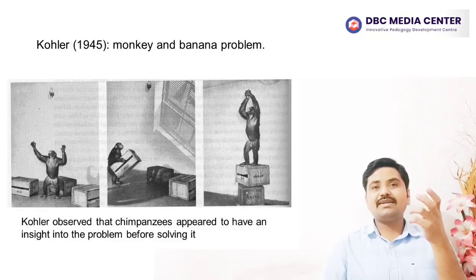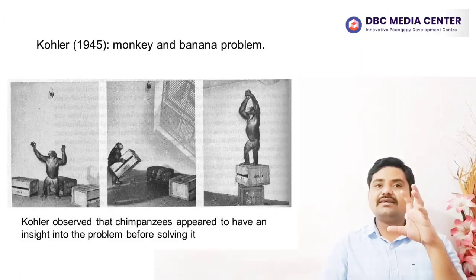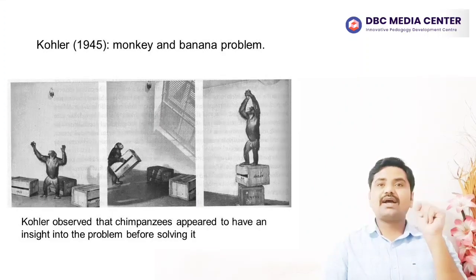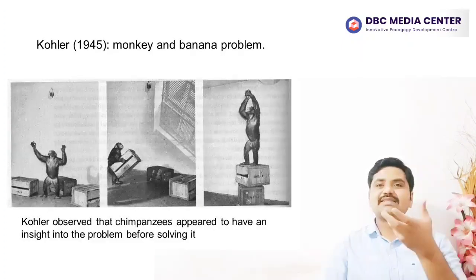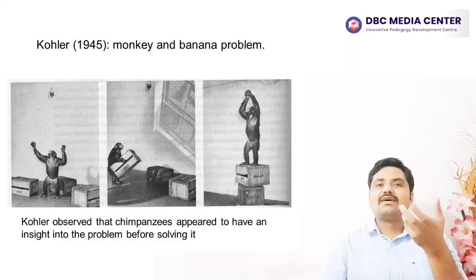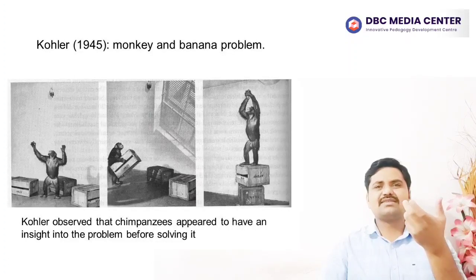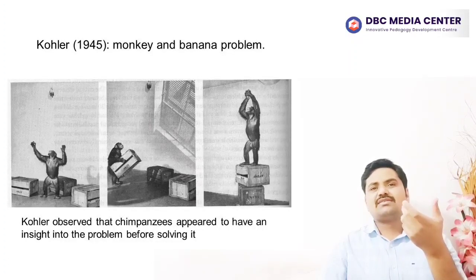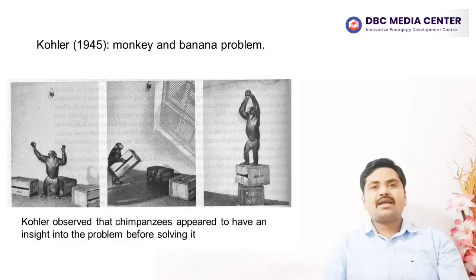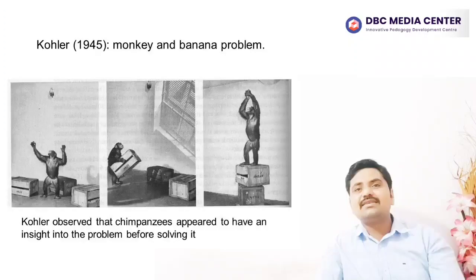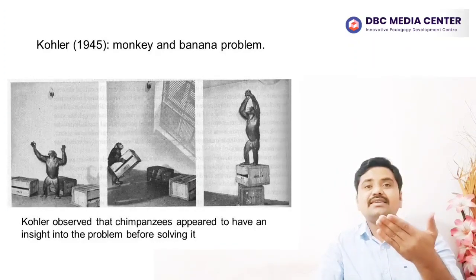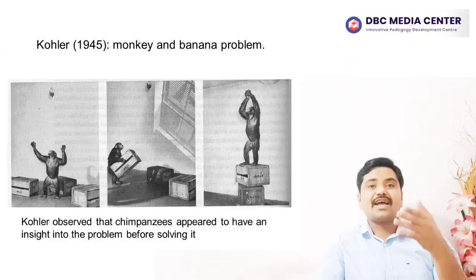In Köhler's experiment, he hung a banana in the chimpanzee's cage too high for them to reach. Several boxes were also placed randomly on the floor. Faced with this dilemma, some chimpanzees, after a few failed attempts, stacked the boxes on top of one another, climbed on top of them, and retrieved the banana. These behaviors suggest they could visualize the result of stacking the boxes before they actually carried out the action.